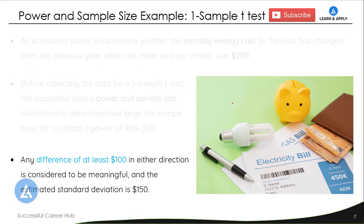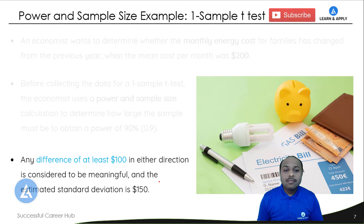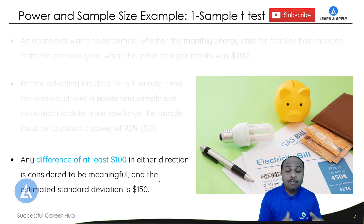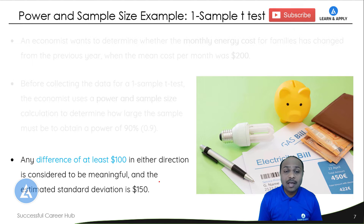Any difference of at least $100 in either direction is considered to be meaningful, and the estimated standard deviation is $150. So here we have the second metric — the difference is $100 and the standard deviation required is $150. Now let's go for the calculation of the sample size for various powers to understand the relationship between power, sample size, and the difference we can detect. I will demonstrate this in Minitab as well as Sigma XL.